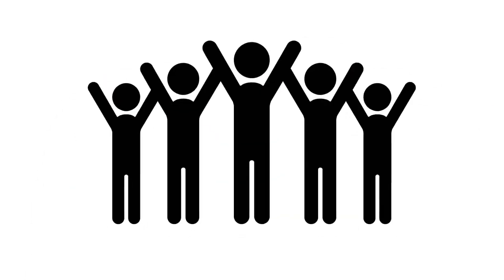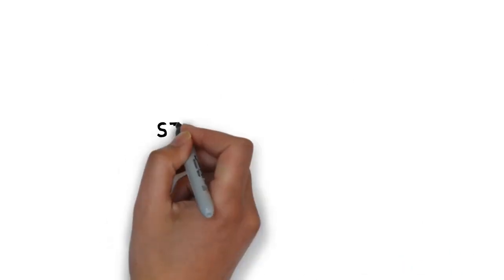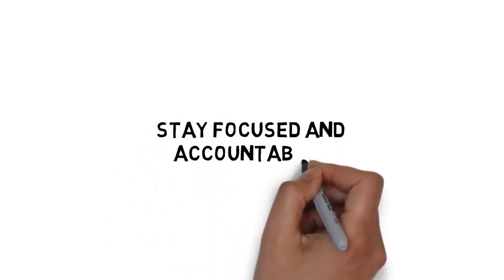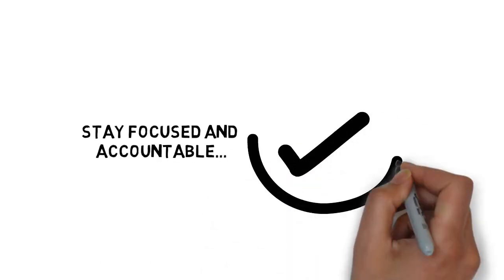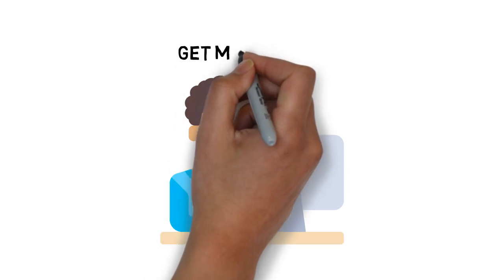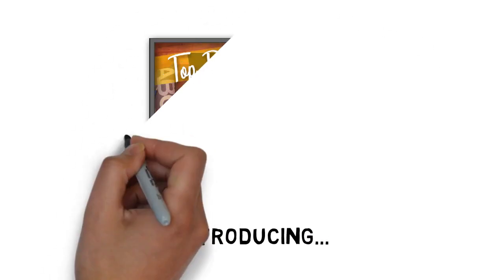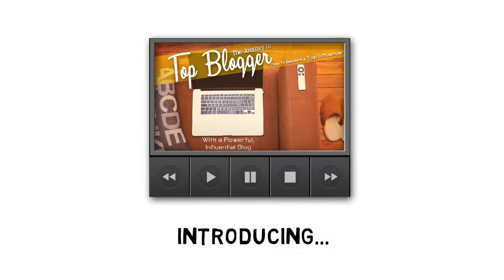Make sure you are able to enjoy more freedom and potentially higher earnings. Stay focused and accountable and follow through and make sure you get ongoing results. Make a lasting improvement in your overall expertise and get more done. Introducing how to become a top influencer with a powerful influential blog video course.